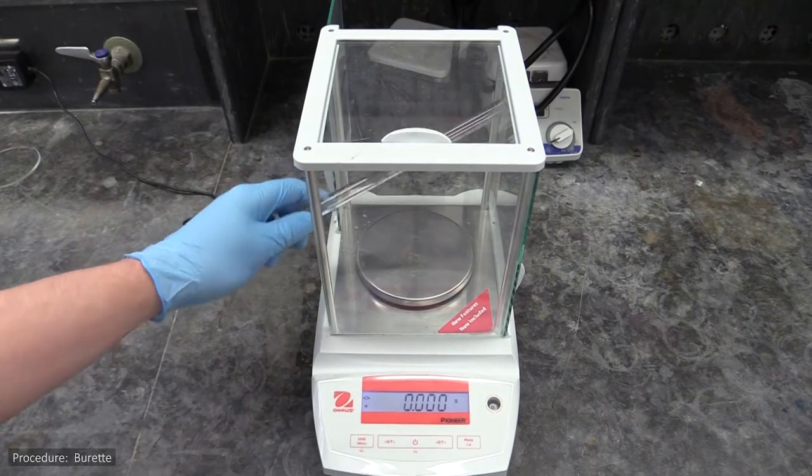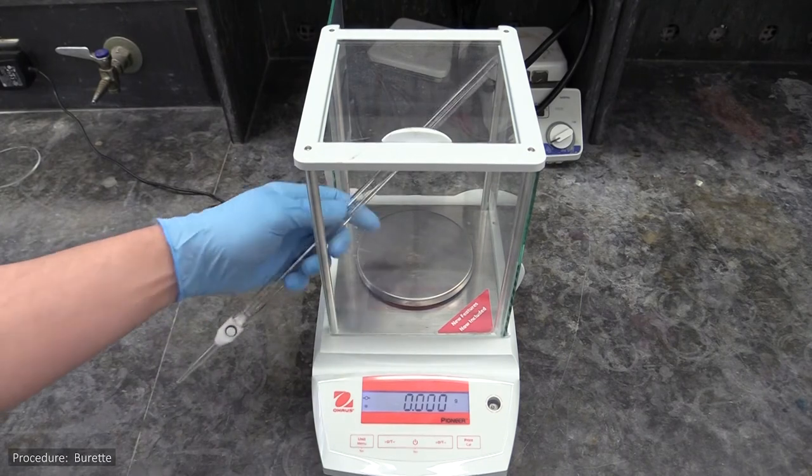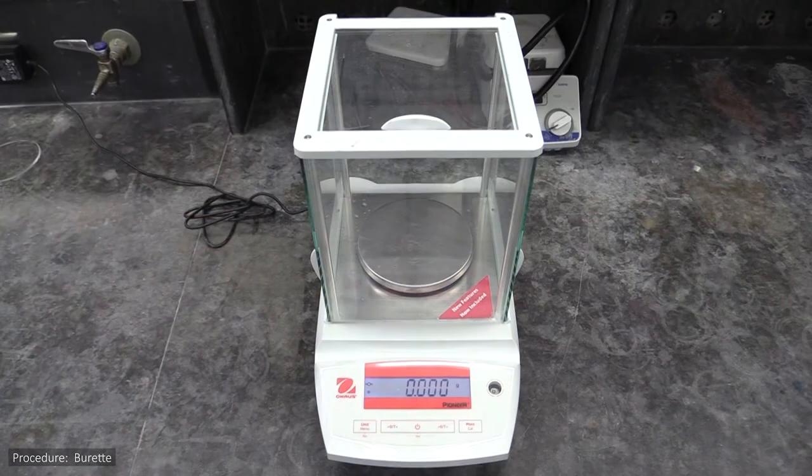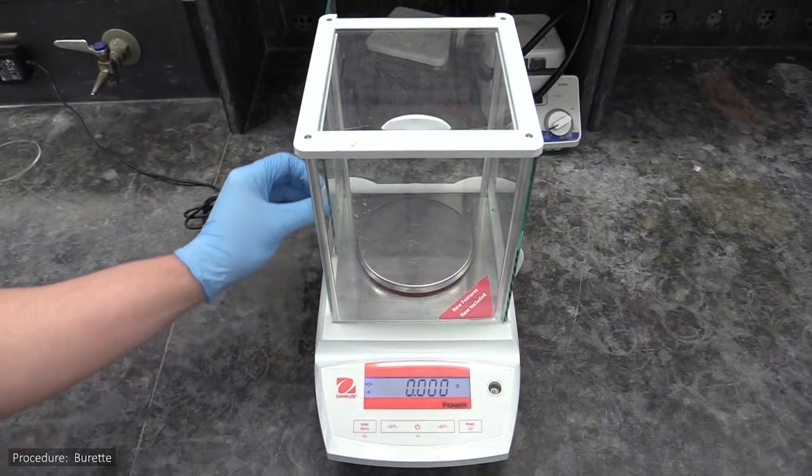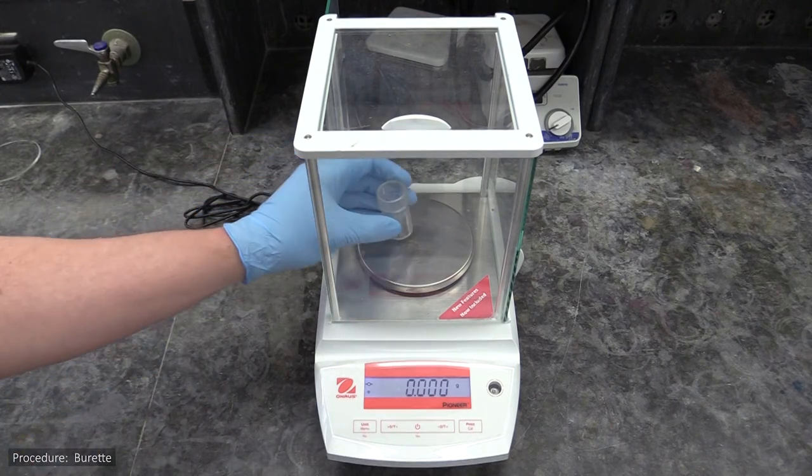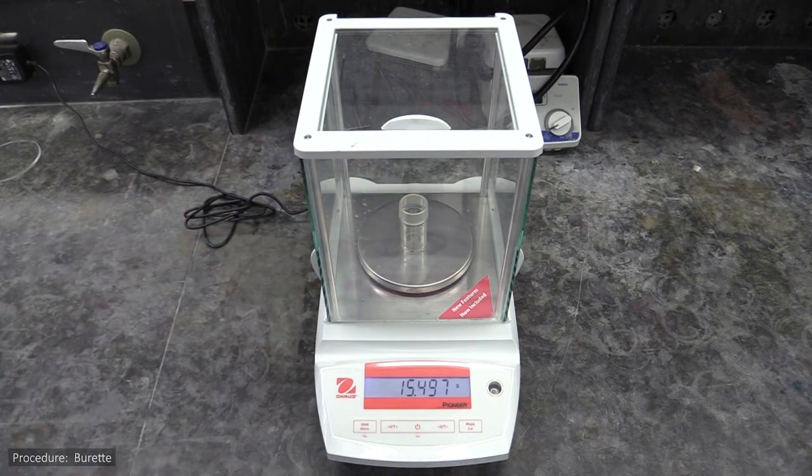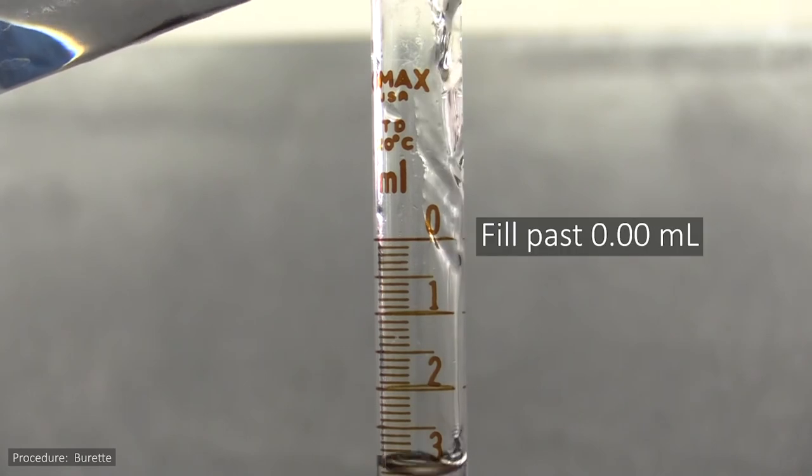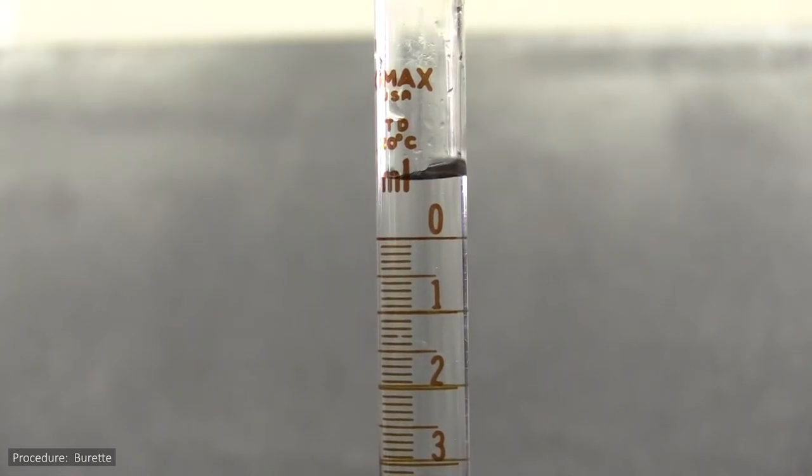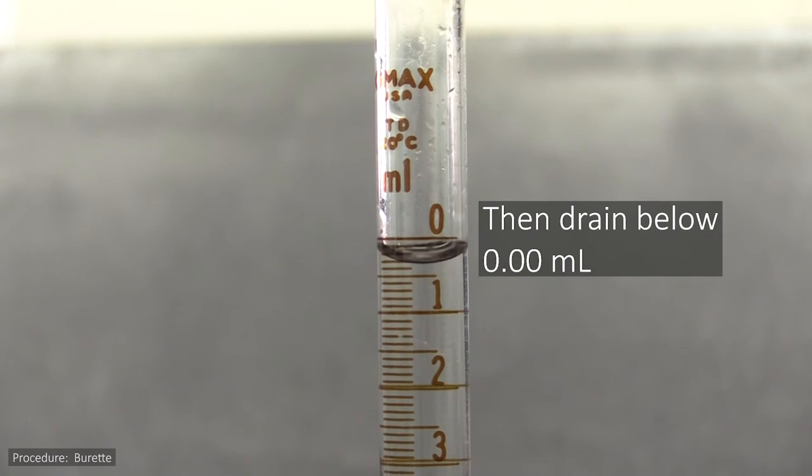Now you won't be able to put your burette or pipette right on your scale, so you'll have to do something a little different for them. To take your burette data, you'll use it to dispense water into a weighing bottle. First, weigh the bottle without any water inside. Next, fill your burette to somewhere past the 0.00 milliliter mark and drain a little of the water out, enough to get it below the 0.00 milliliter mark.